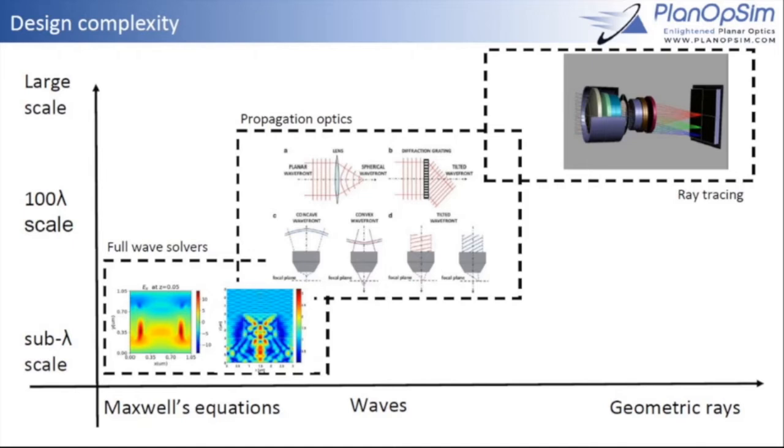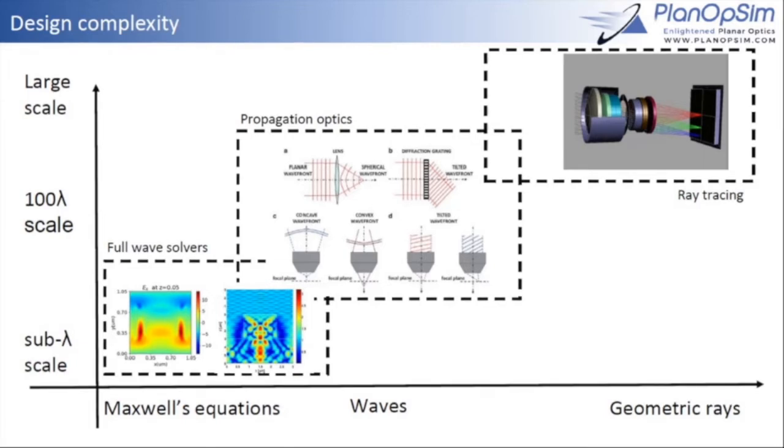But these solvers are all limited to a couple of wavelengths in size, so once you get to even modest sizes, it becomes too expensive and more approximations are needed for propagation optics. These work great on a single component level. Once we get to large scales, meaning both a couple of components as well as a couple of meters or centimeters in size, propagation optics starts to become too cumbersome. We have to go to ray tracing design.